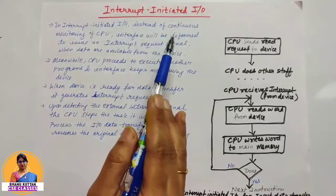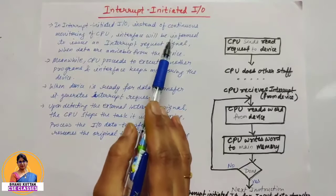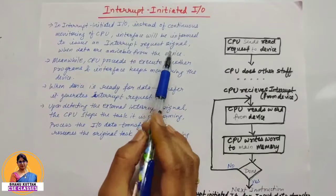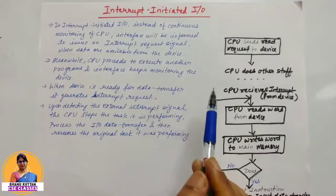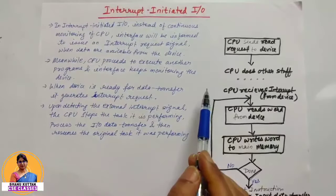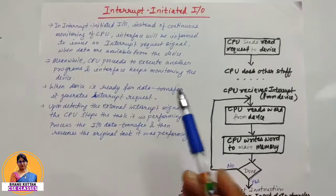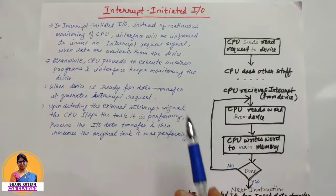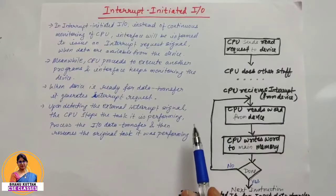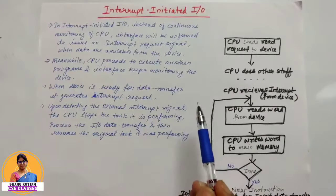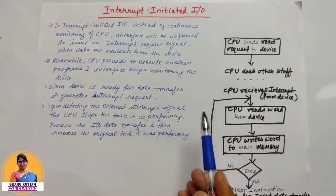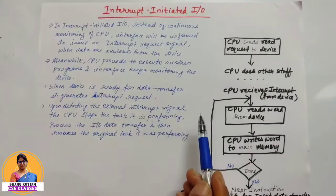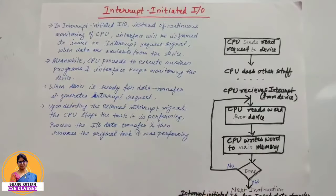What is an Interrupt? We can define an Interrupt as a high priority signal which is generated by either an external device or some software. An Interrupt is a high priority external signal generated by a hardware device or software program to get the immediate attention of the CPU.